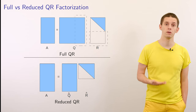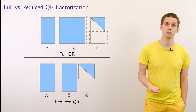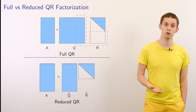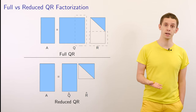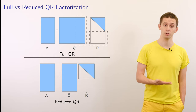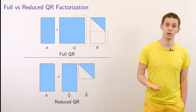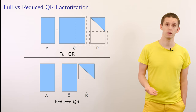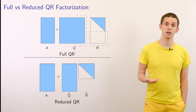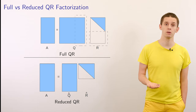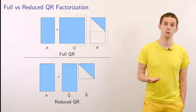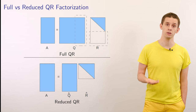The second approach, the reduced QR factorization, expresses A as the product of Q̂ — which matches the size of A — and the square matrix R̂ of size n by n. We'll now take a look at how to compute both the full and reduced QR factorizations using Python.